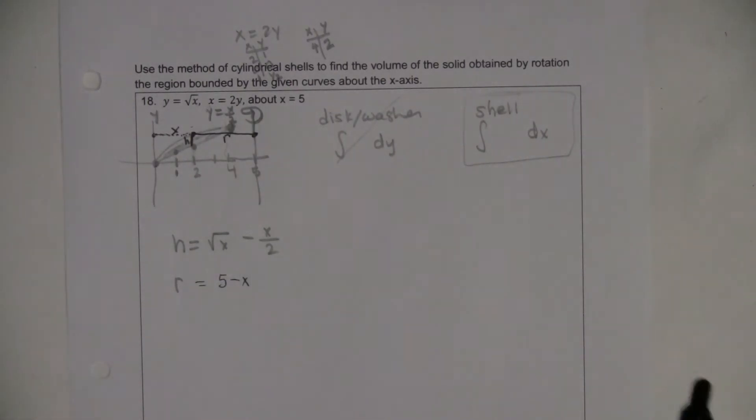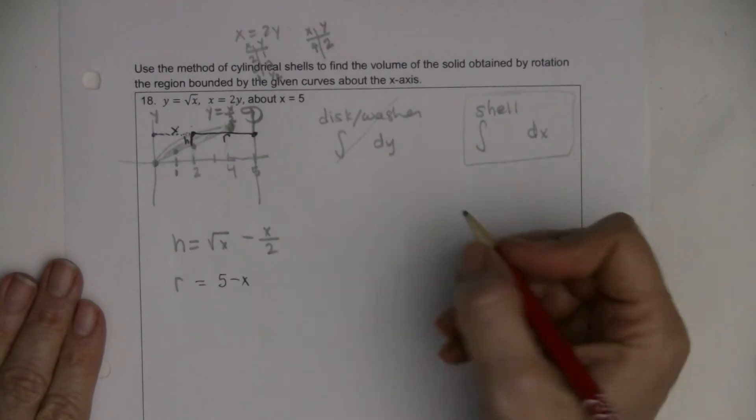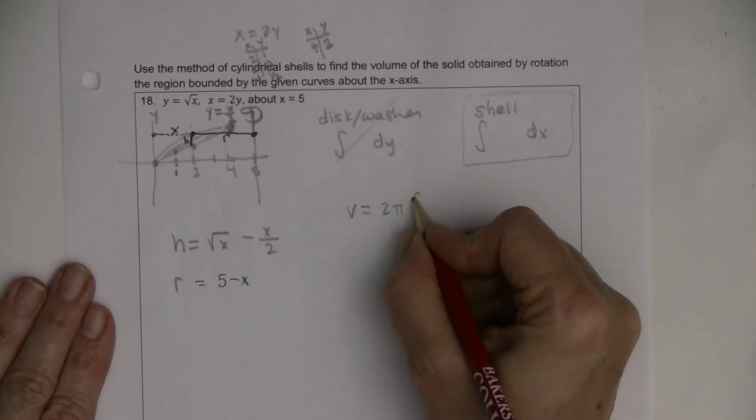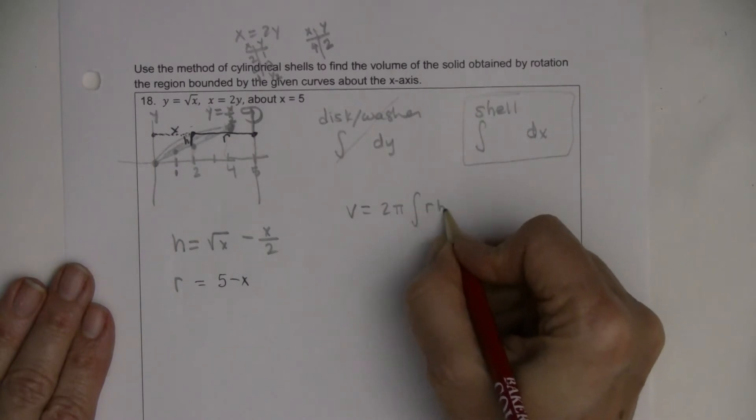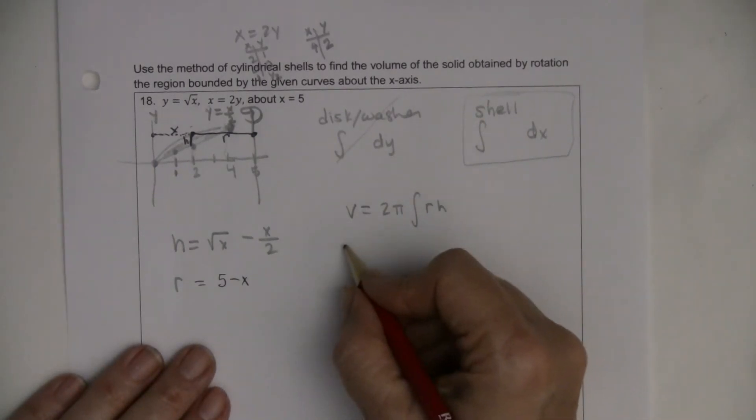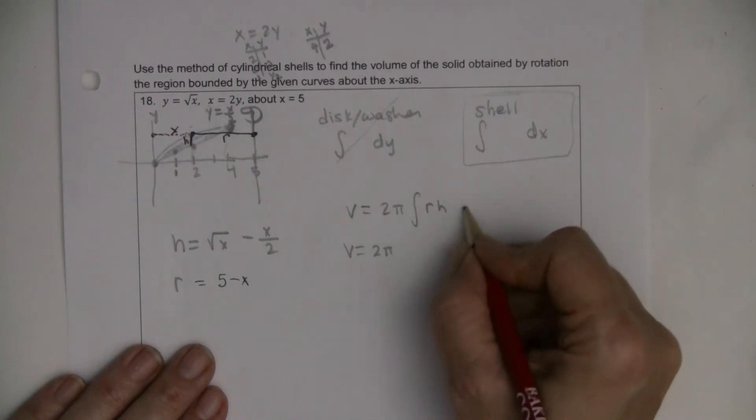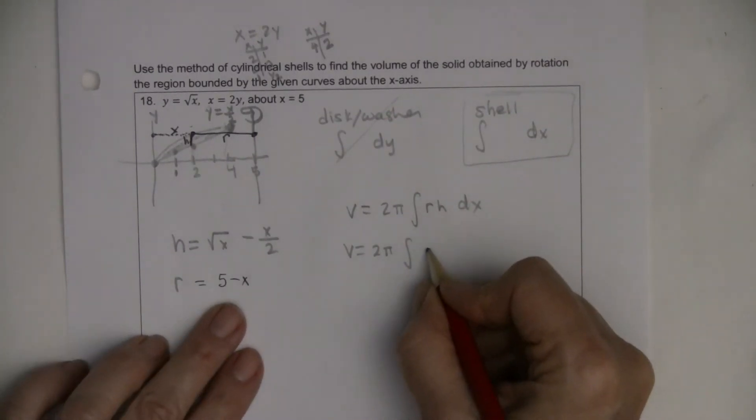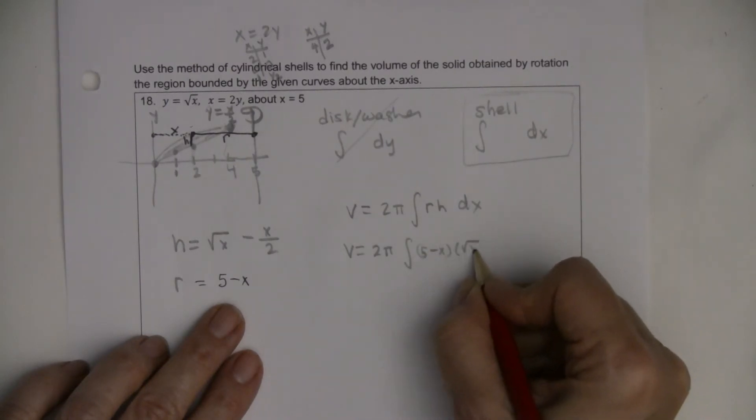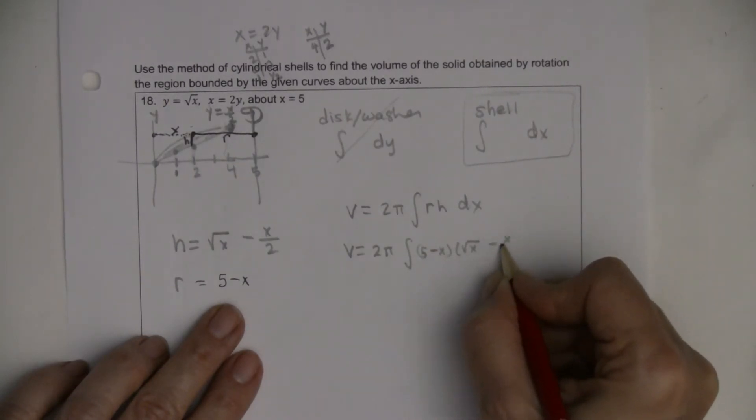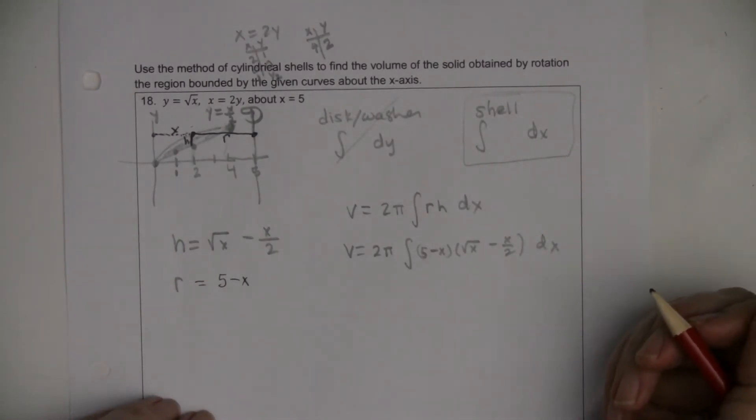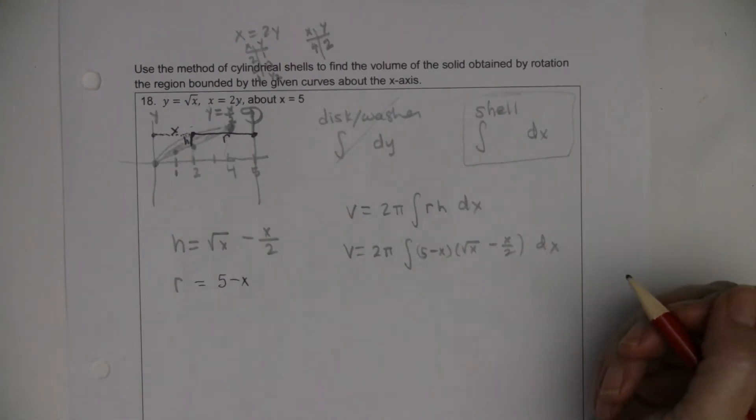And then now I'm ready, I'm in business here. So remember that the volume of a shell is 2πrh. And so in this case, this is 2π dx times (5 - x) times (√x - x/2) dx. So I'm going to have to multiply that together using FOIL. It's not going to be that bad.